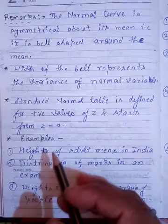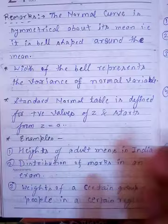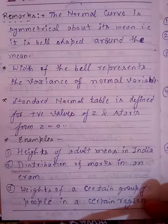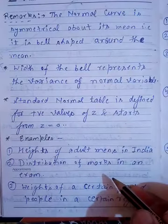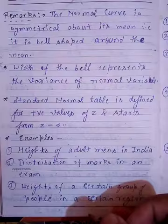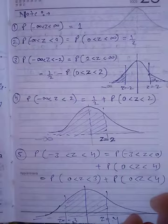The standard normal table is defined only for positive z values — from 0 to positive values like 1, 2, 3. Negative values are not directly defined in the standard normal table. Examples where normal distribution applies include height of adult men, distribution of marks of a group of students in a certain exam, and weights or heights in a certain region.